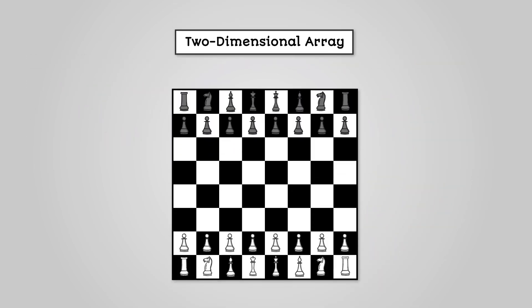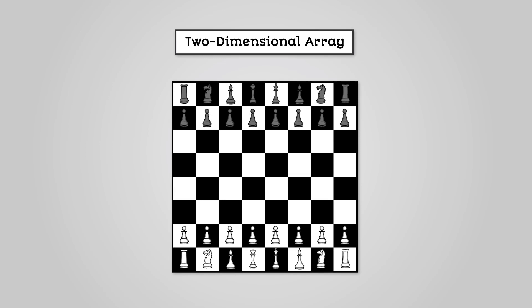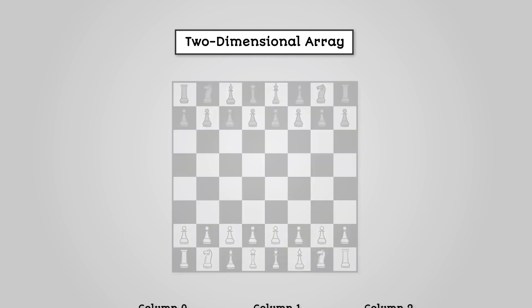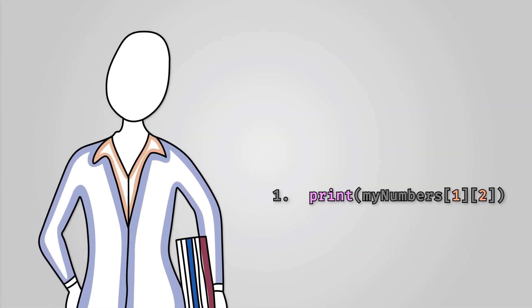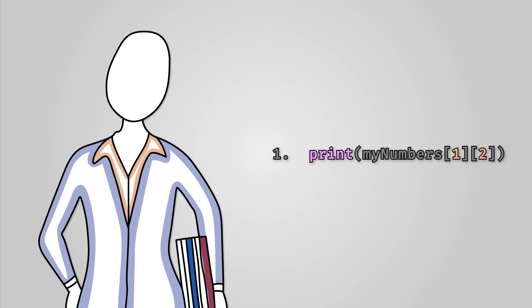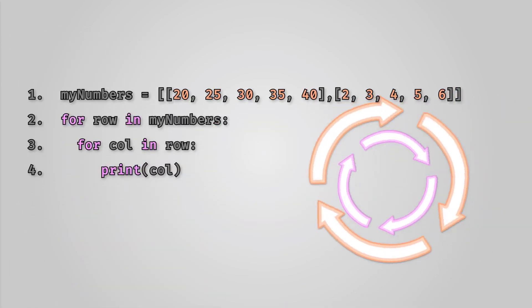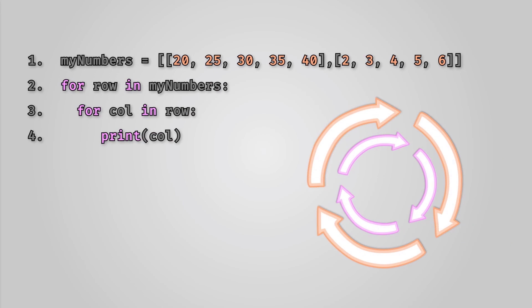So, 2D arrays are used when you want to store table-based data in rows and columns. Each element has two index numbers indicating the row and column of its location. To get data in or out, you need to use both numbers. To get all the data out of the array, you need to use a nested for loop.